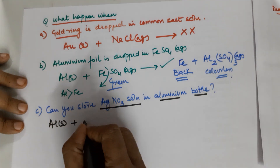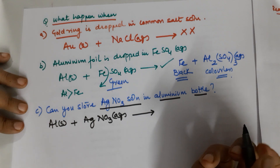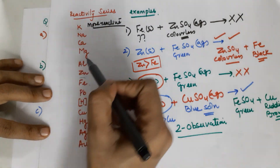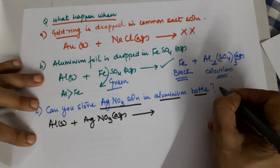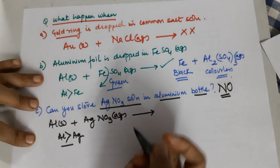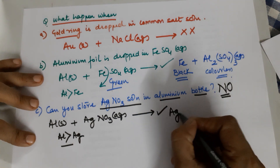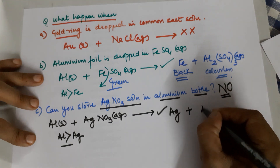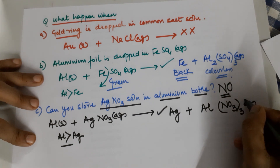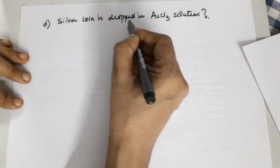Can you store silver nitrate aqueous in an aluminium bottle? Silver falls under the less reactive metals while aluminium is much more reactive, so aluminium will displace silver. The answer is no — you cannot store it because aluminium is more reactive than silver, the reaction is bound to happen. Aluminium will react with silver nitrate, remove silver from the solution, and combine with nitrate. Aluminium has a valency of 3 and nitrate has a valency of 1, so the formula of aluminium nitrate is Al(NO₃)₃.